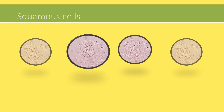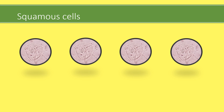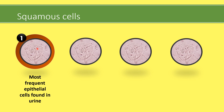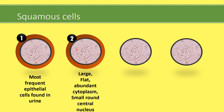Let's learn a few points regarding squamous cells. Why do you call these squamous cells? Because these are the most frequent epithelial cells found in urine. Look at the structure — these are large flat cells with abundant cytoplasm and small round central nucleus. The margins are also folded in some cells. This structure resembles squamous cell morphology.